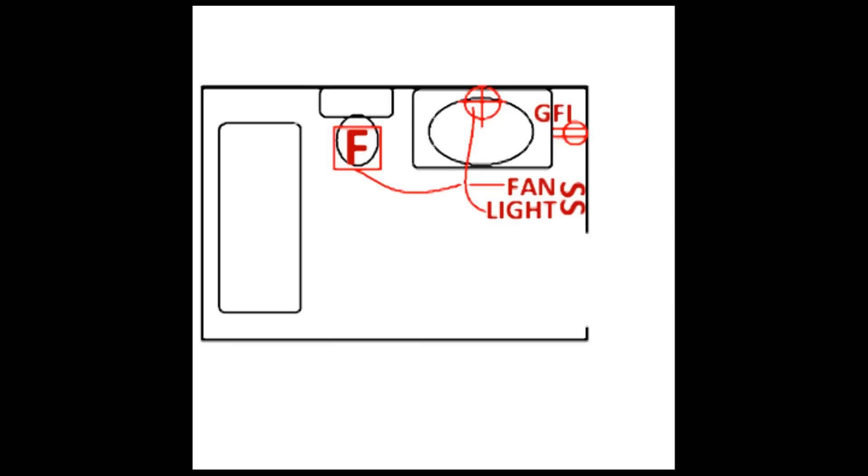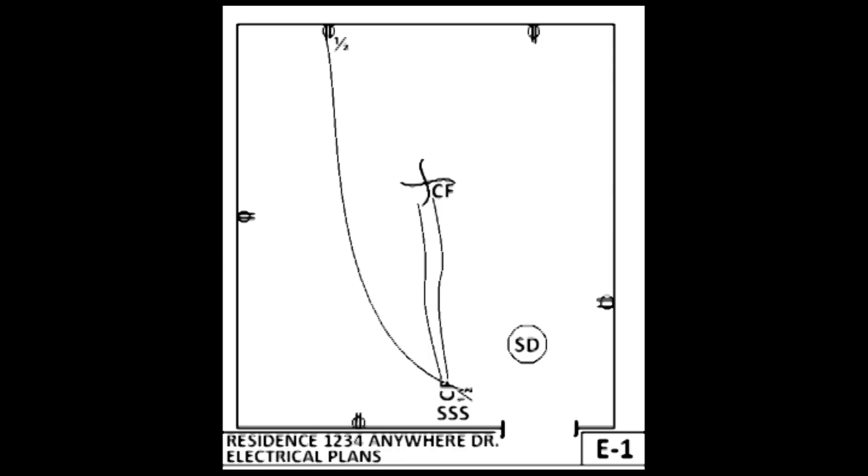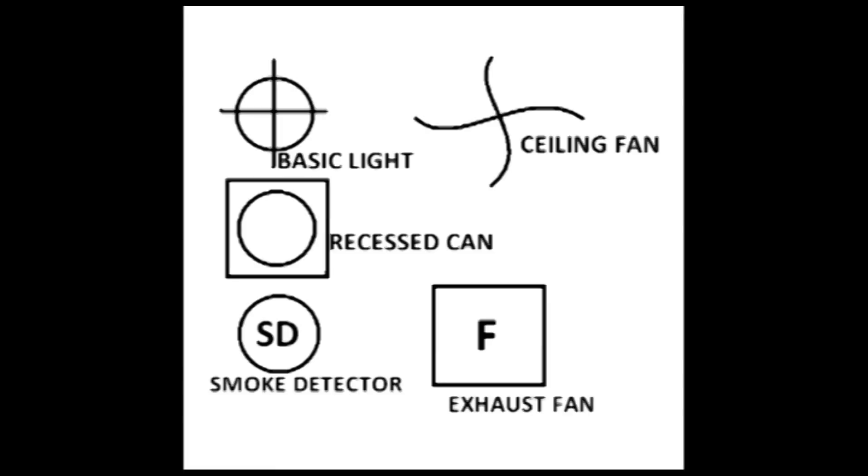In the basic E1 diagram, I show you what a bathroom layout looks like. Notice the fan and light markings. And I show you what a bedroom layout looks like. You see the ceiling fan and you see the half hot. If this makes sense to you, you can read any layout. To finish up, let's go over some floor markings.